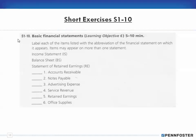Now exercise 1-10: label each of the items listed with the abbreviation of the financial statement on which it appears. Items may appear on more than one statement. Every business has an income statement and a balance sheet.